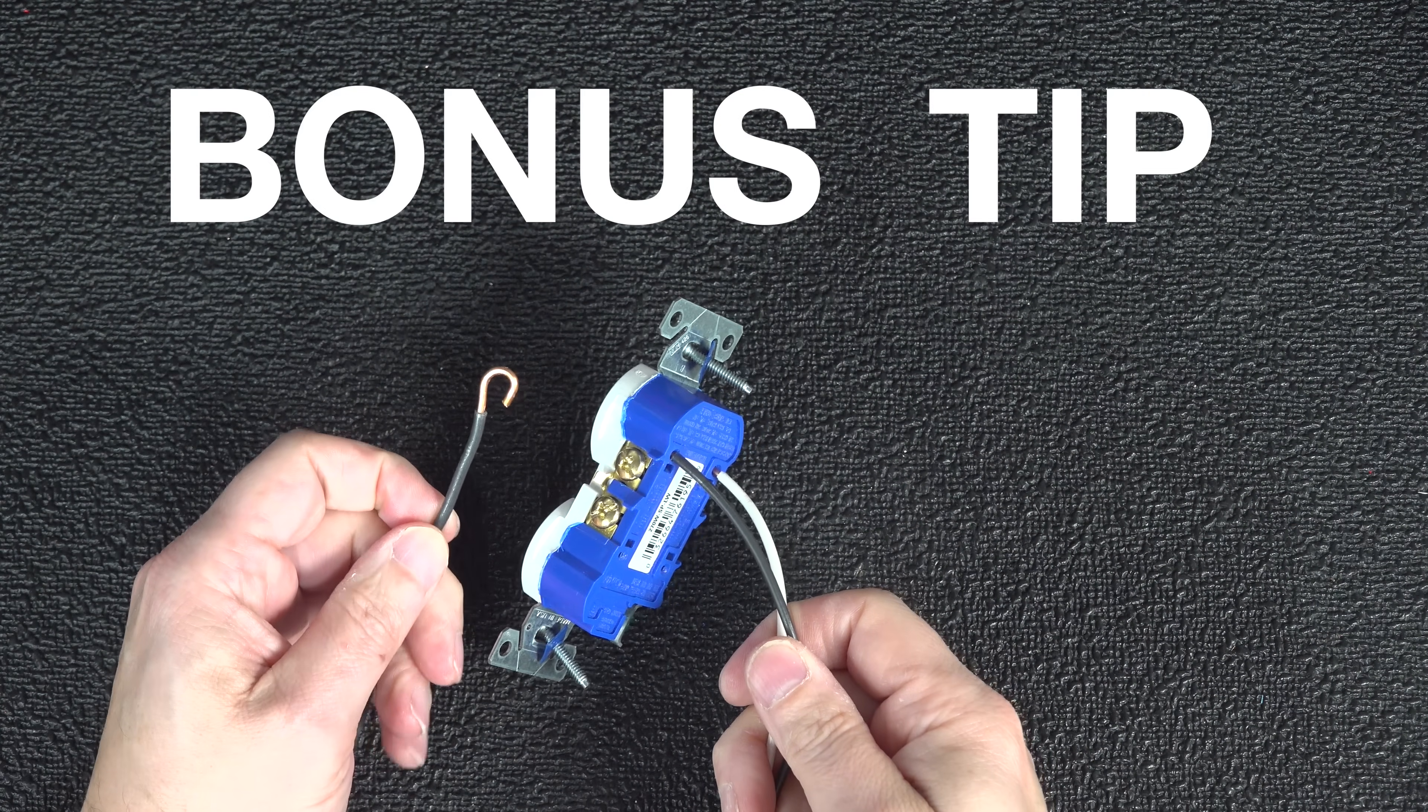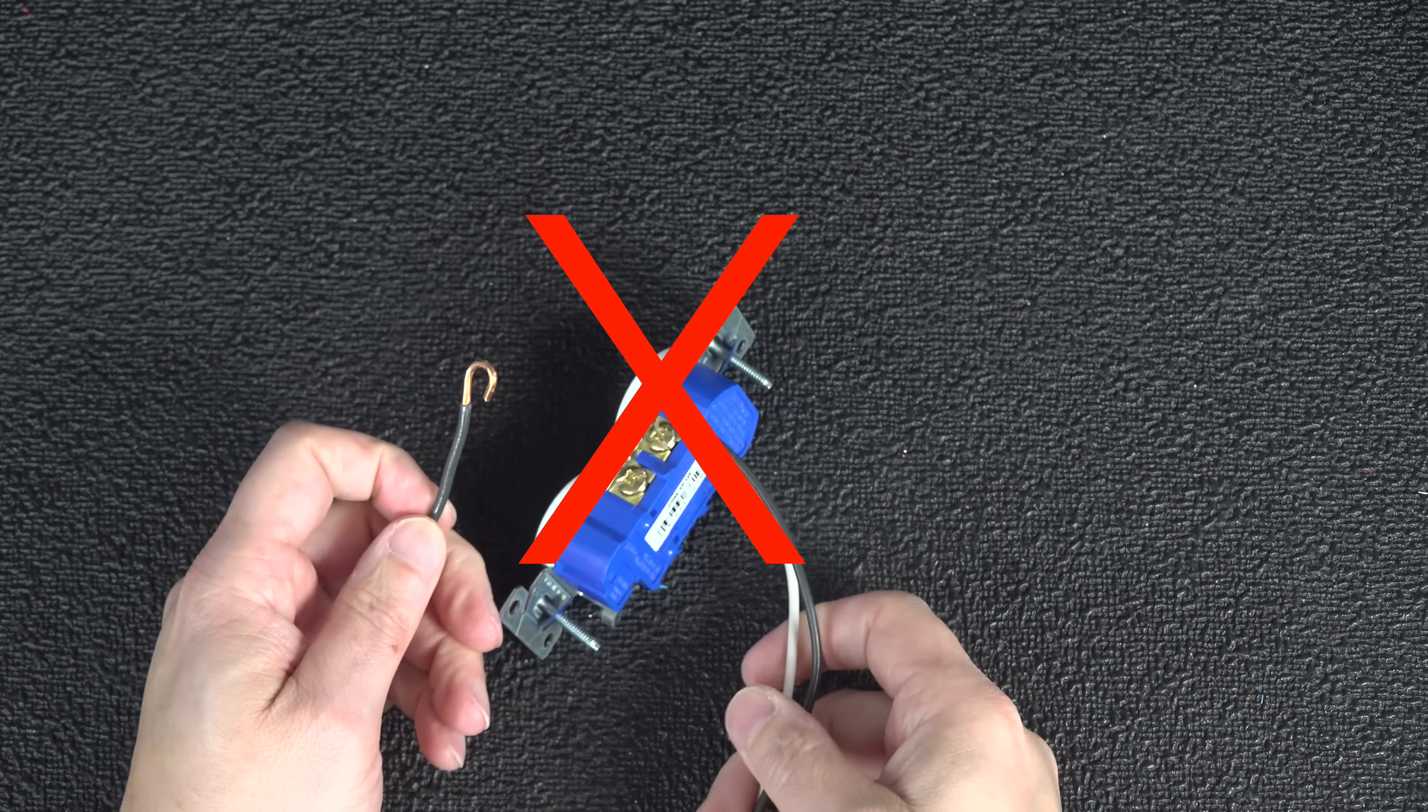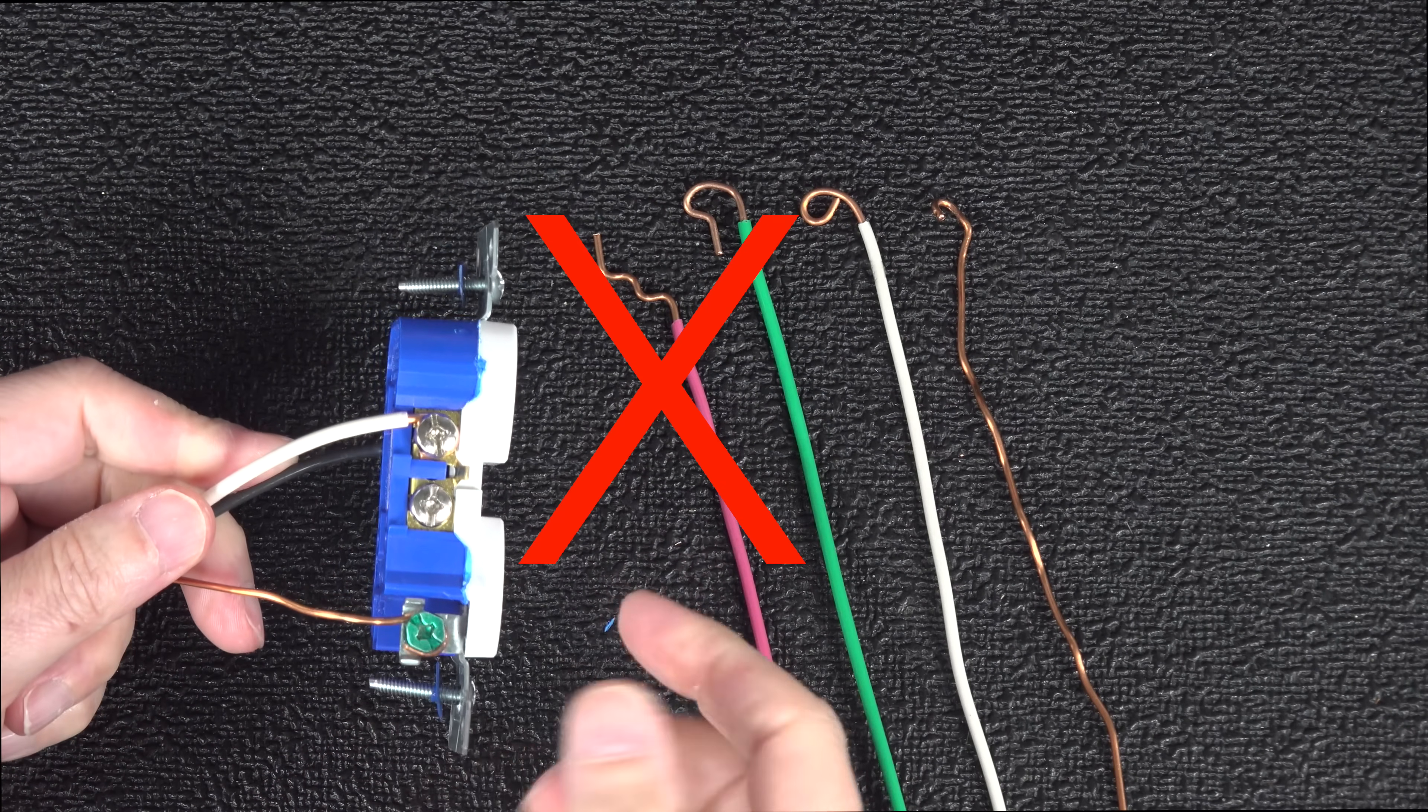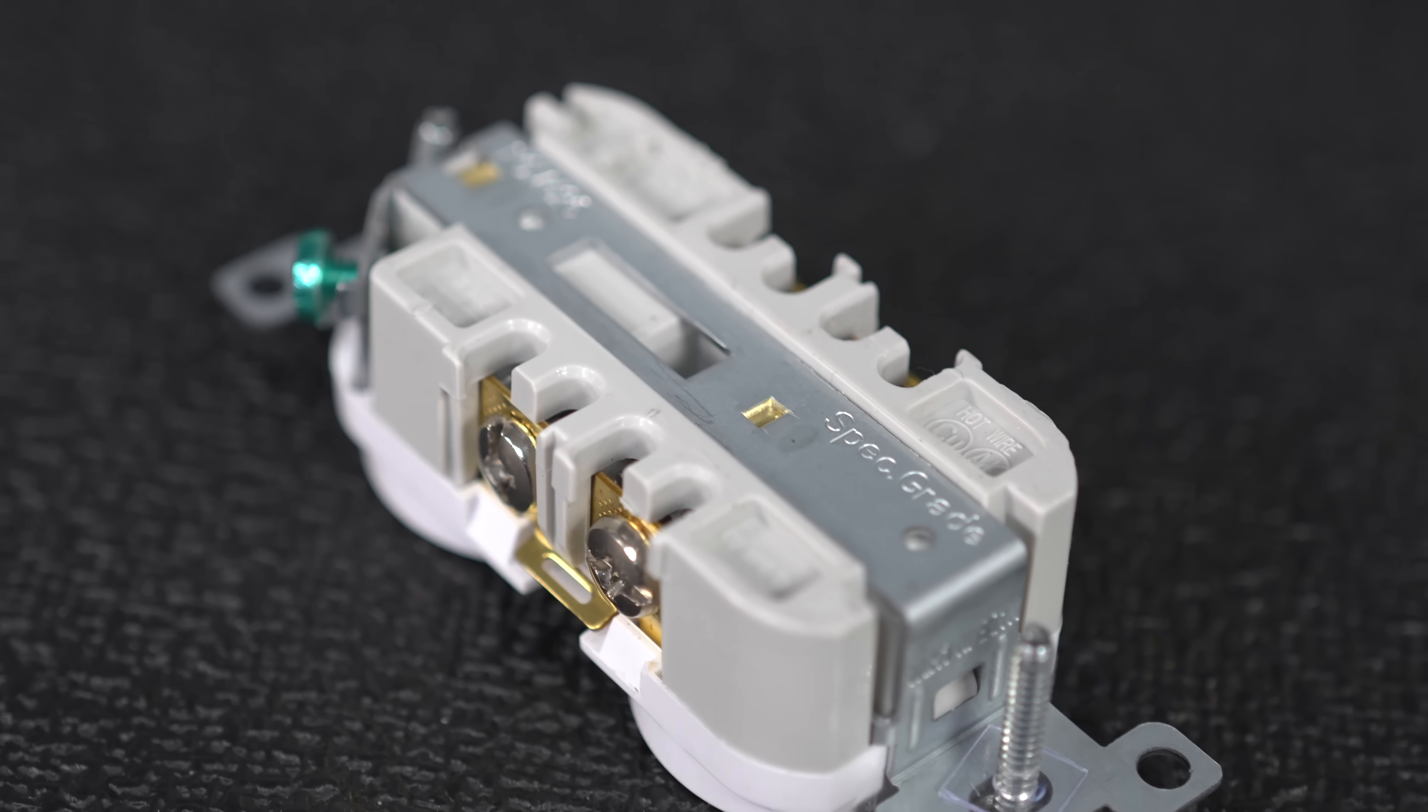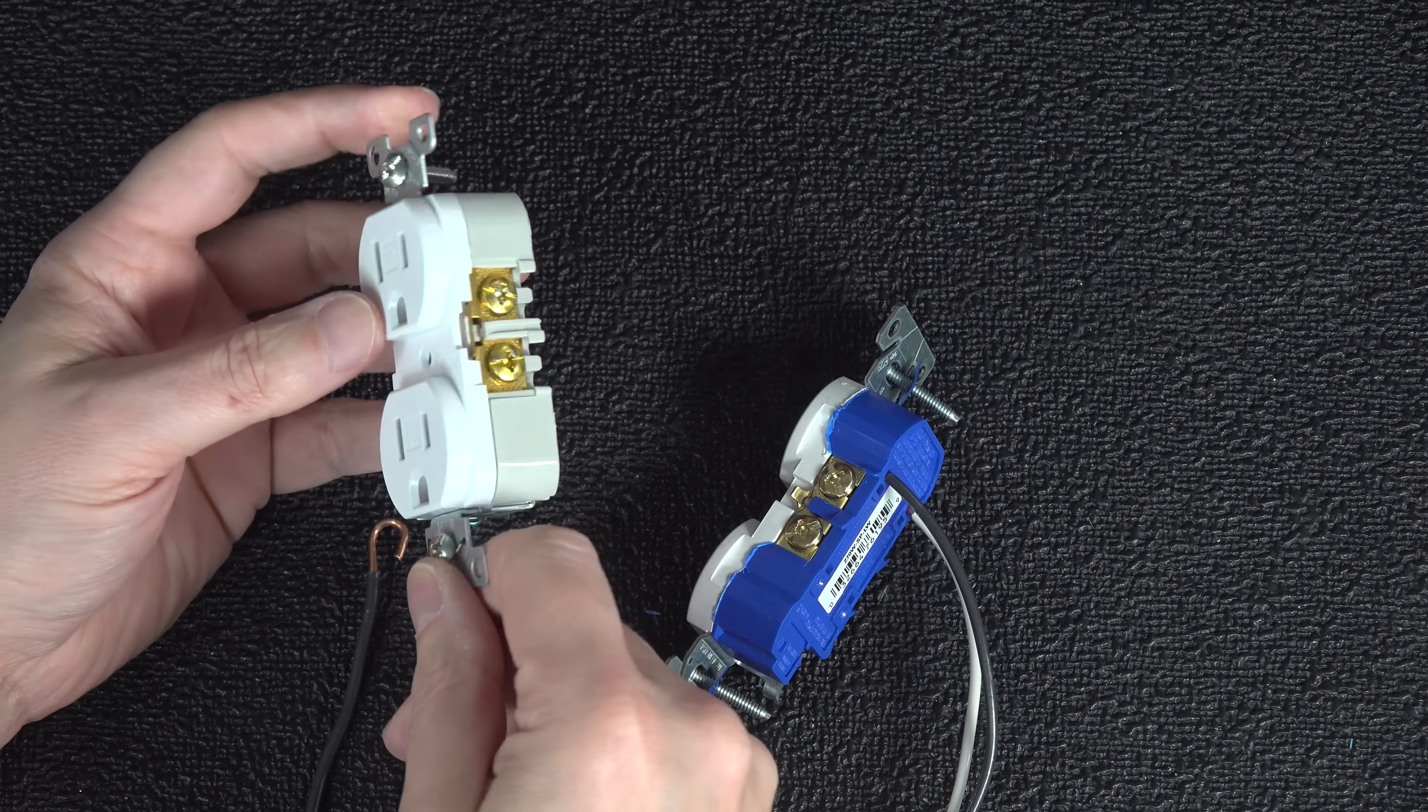And now it's time for that bonus tip and this one is the best one of all. I'm going to show you how you can wire up an electrical outlet. You'll never have to make one of those crazy hooks and you're not going to use those back wiring holes. Almost every type of outlet you buy today offers a slightly upgraded version like this. Now this might look like a regular outlet but it's got a built-in feature that you're going to absolutely love.